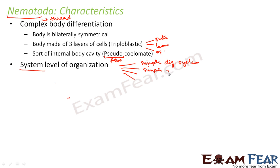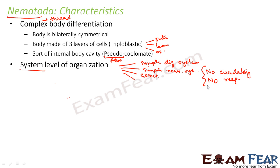It has also got a simple nervous system. It also has an excretory system — excretion is done by cilia or flagella. There are no circulatory system or respiratory system. So the systems present are a digestive system, a nervous system, and an excretory system. They are not very complicated systems, they are all simple systems. But at least some body systems are present here, and that is why it is said to have a system level of organization.